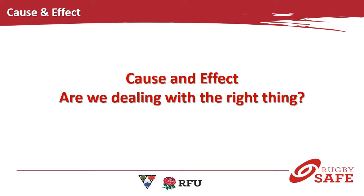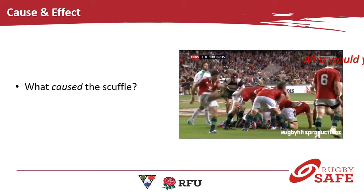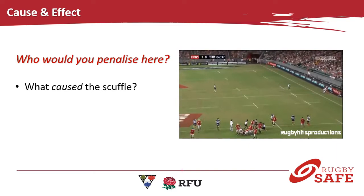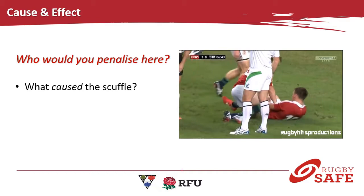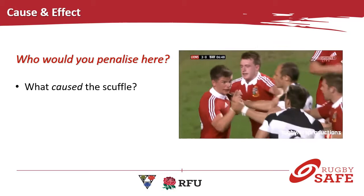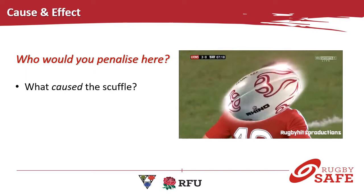If we'd have dealt with the cause — which was the previous scuffle where a player felt aggrieved that the referee did nothing — the effect would have been that we might have managed it better and the second scuffle, which escalated as we saw in the video, might never have happened. We just need to know that we're doing the right thing. So what caused this scuffle and who would you penalise? Farrell responded to something and the Barbarians player ended up on the deck. It's already hot enough out there, and now it is boiling over.